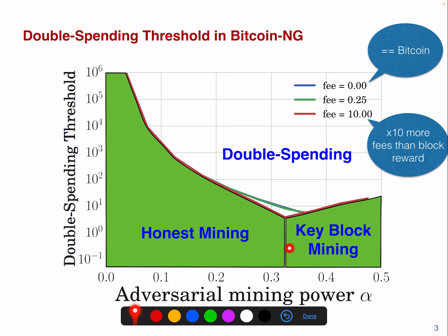The problem is that if a miner starts mining on the key block, the miner will no longer mine on a micro block. So there are no transactions included in the blockchain any longer, and this can cause a denial of service of the network.